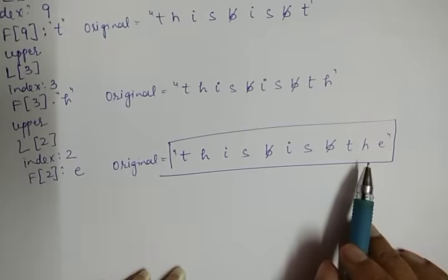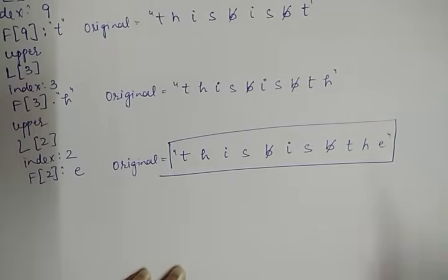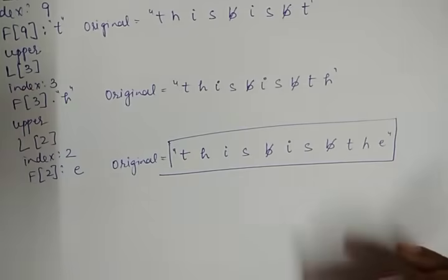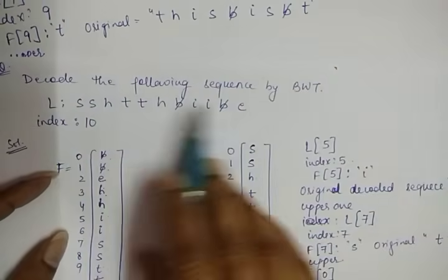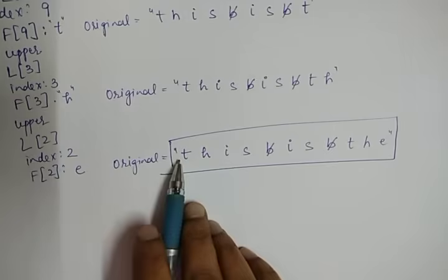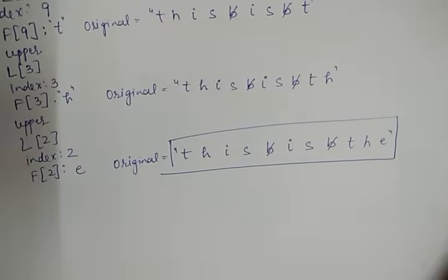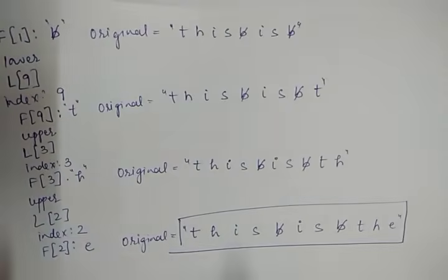This is your final answer — the original sequence taken in our previous lecture for encoding by BWT. You can verify the length: L contains 11 values, so we calculated the original sequence of length 11. This is how the decoding process completes. It looks complex but it is actually an easier technique. If you have any doubts, place your query in our comment box, and if you like our video please subscribe to our channel. Thanks for watching.